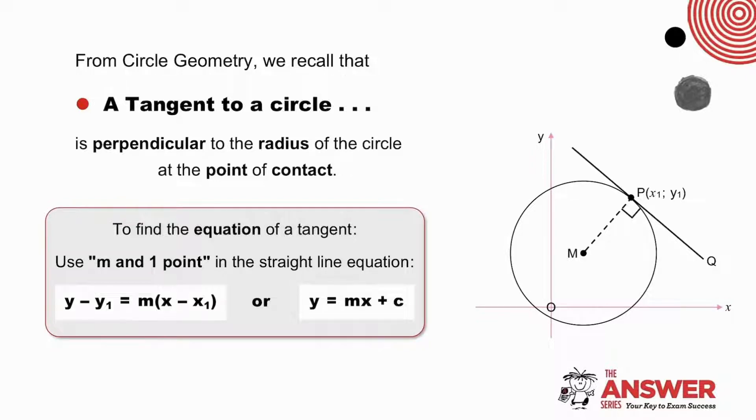From circle geometry, we recall that a tangent to a circle is perpendicular to the radius at the point of contact. So if the gradient of the tangent is equal to minus 5, then the gradient of the radius will be equal to plus a fifth, the negative reciprocal of minus 5.